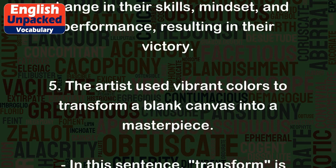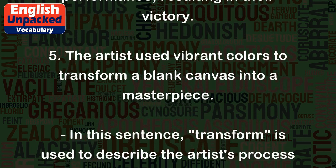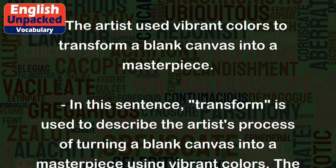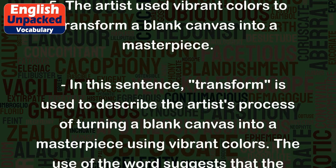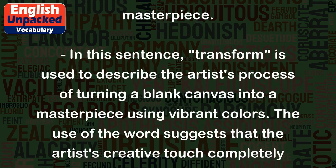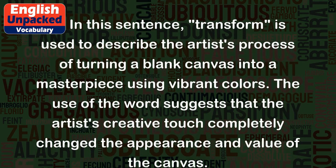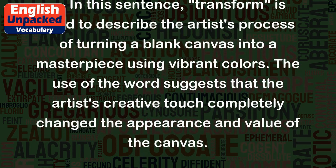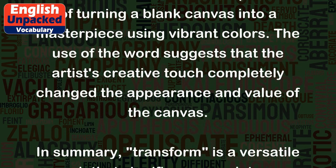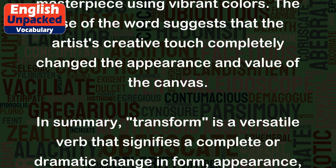Example 5: The artist used vibrant colors to transform a blank canvas into a masterpiece. In this sentence, 'transform' is used to describe the artist's process of turning a blank canvas into a masterpiece using vibrant colors. The use of the word suggests that the artist's creative touch completely changed the appearance and value of the canvas.